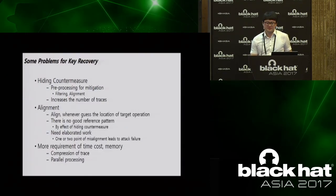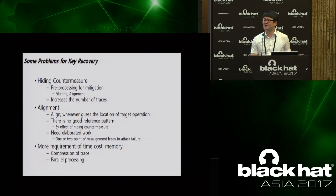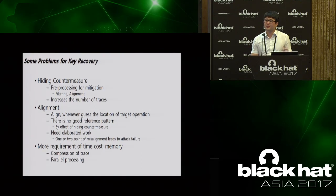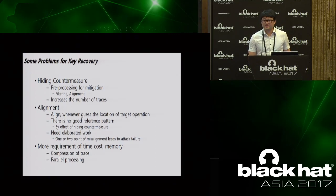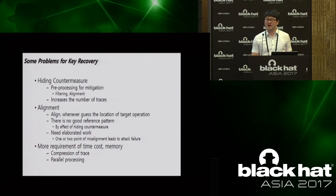There are some problems that make this work so difficult. To overcome the hiding countermeasure, we need to preprocess and collect more power traces. Alignment was the most difficult task. Due to the hiding countermeasure, it was difficult to align the traces, and misalignment of even 1 or 2 points fails the attack. So elaborated work is required for efficient and fast pre-processing. For DPA with numerous traces, we compressed the power traces and parallelized our analysis tool.